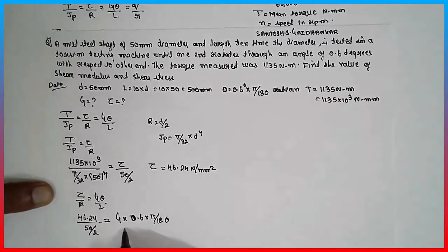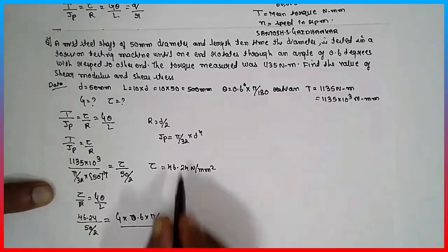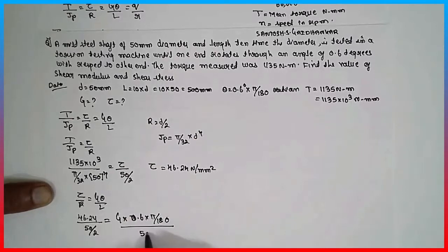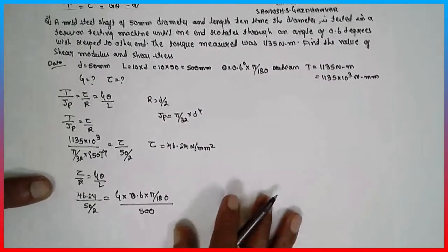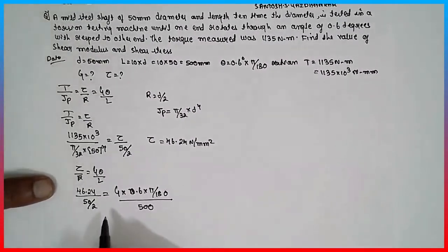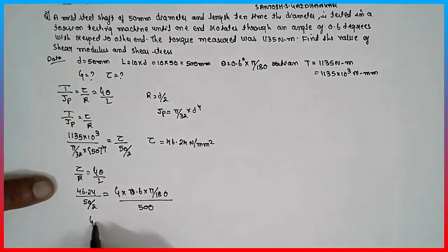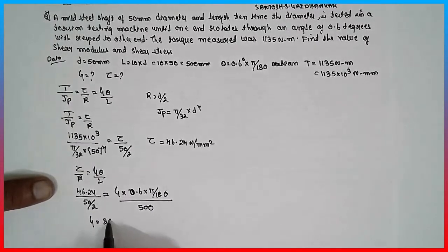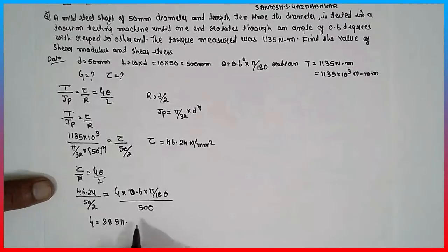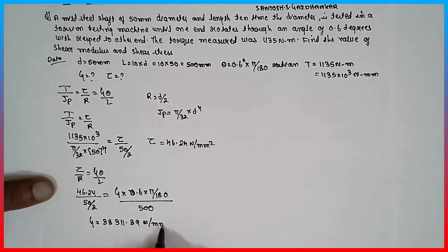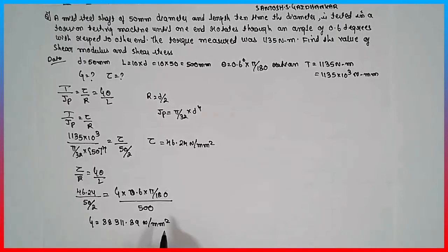Divided by length 500. Cross multiply, you will get the G value is equal to 88311.89 Newton per mm square.